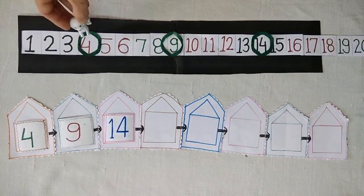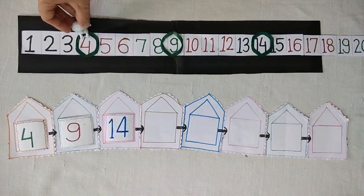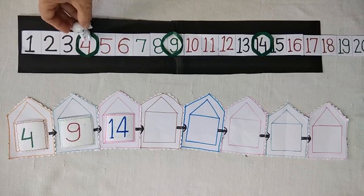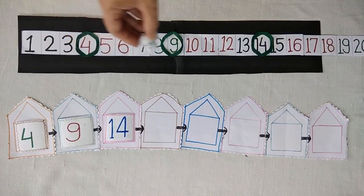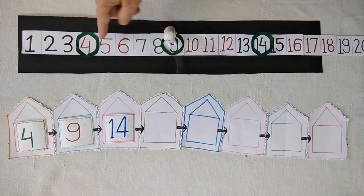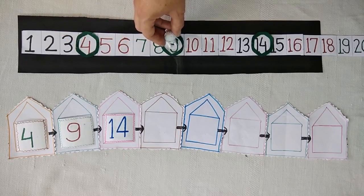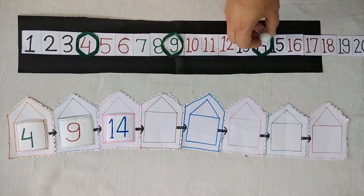Now tell me where is it standing. Yes, it is standing on number 4 and jumps to 9, skipping 5 numbers. Then jumps to 14.